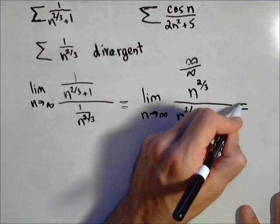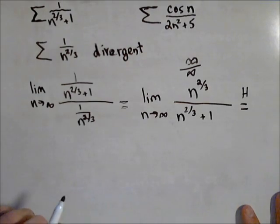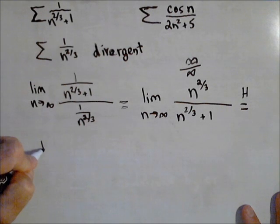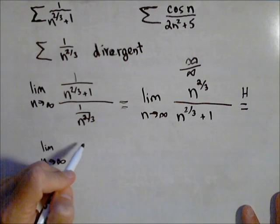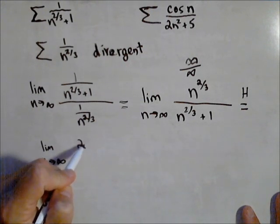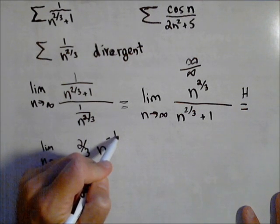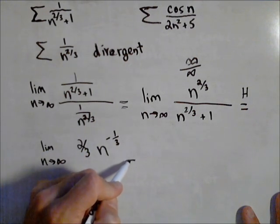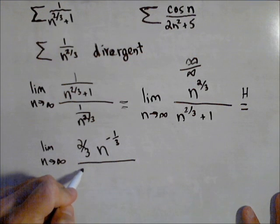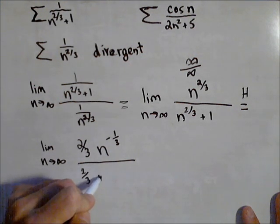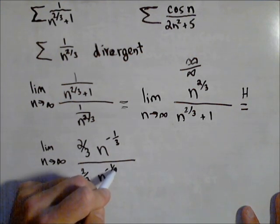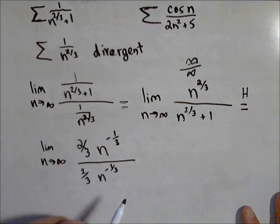So I'm gonna apply L'Hopital's rule. L'Hopital's rule says to take the derivative of the top and the bottom, recalculate your limit. So I have the limit as n goes to infinity. On top I have (2/3)n^(-1/3). On bottom, (2/3)n^(-1/3), derivative of one is zero.